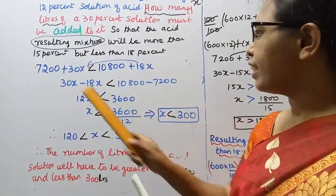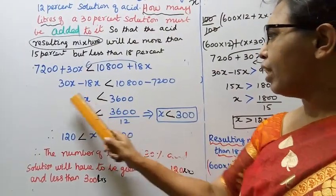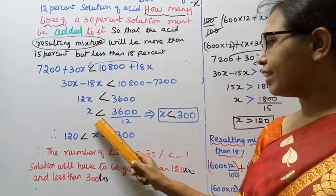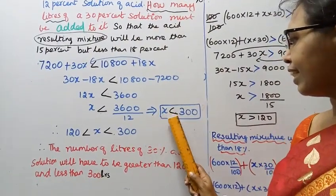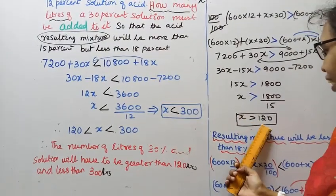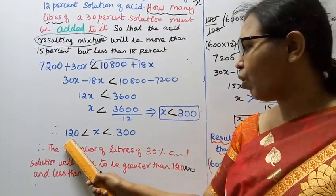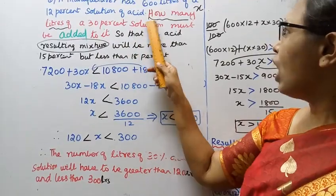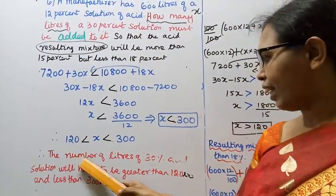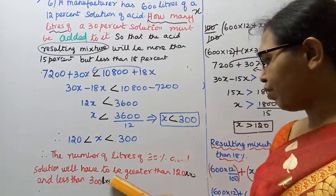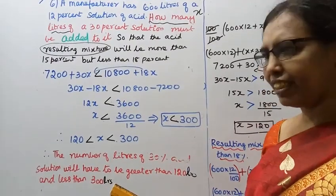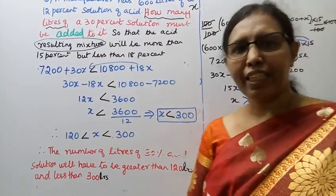7200 plus 30X is less than 10800 plus 18X. So 30X minus 18X less than 10800 minus 7200. That gives 12X less than 3600, so X is less than 300. Therefore X lies between 120 and 300. The number of litres of 30% acid solution must be greater than 120 litres and less than 300 litres.